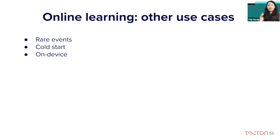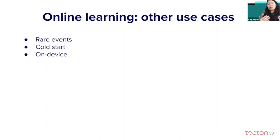There are other use cases for online learning. One is for rare events. Imagine events that rarely occur, such as Black Friday for shopping. Black Friday happens only once a year, so it's really impossible to get enough historical data to effectively predict what users are going to do this year. To be really effective, you want to learn on the fly on that day — from the very beginning of Black Friday — to see what users are going to do next.